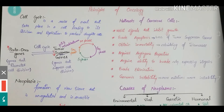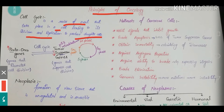Let us talk about the principles of oncology — one of the most important topics regarding general surgery. Before going into the principles, let me explain what a cell cycle is and how it can move in a direction that leads to carcinoma. A cell cycle is defined as a series of events that take place within a cell leading to its division and replication to produce daughter cells. It has different phases: G1 phase, S phase, G2 phase, and M phase. There are also two types of genes very important for understanding carcinoma.